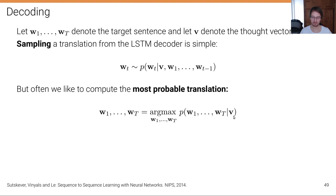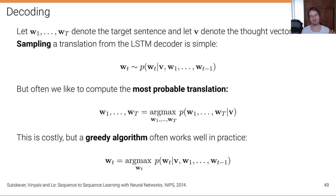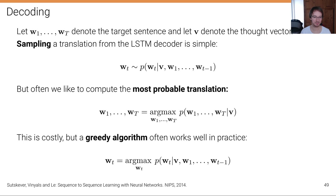This is very costly because there's a large number of possible translations, so searching exhaustively is intractable. A greedy algorithm might actually work well and often does in practice. A greedy algorithm finds the best word that maximizes the probability up to that word — we take argmax over only wT given v and all the previous words before t. It's important to note that these two objectives are not the same; a greedy algorithm is often a good approximation.